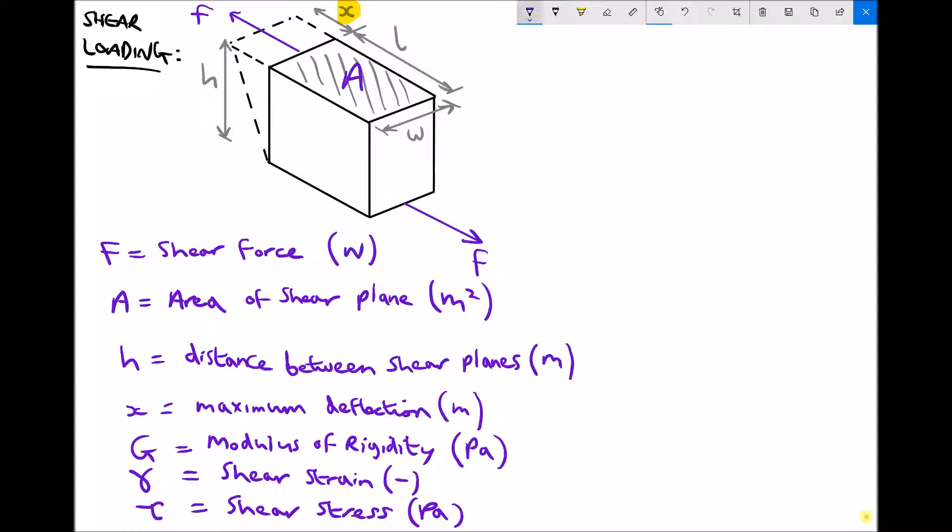As we move on, we have a set of equations. Shear stress is force divided by area, or the shear force divided by the area of the shear plane. Gamma, the shear strain, is the maximum deflection over the distance between the shear planes, or x over h. As mentioned previously, if there's no distance between the shear planes, then we can't have any deflection. There needs to be a distance between the forces in order for the block to skew.